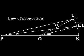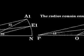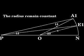As E1 moves between A1 and N, the ratio of 1 to a half to a half remains constant. The law of proportion. The radius OA1 and OE1 remain constant.